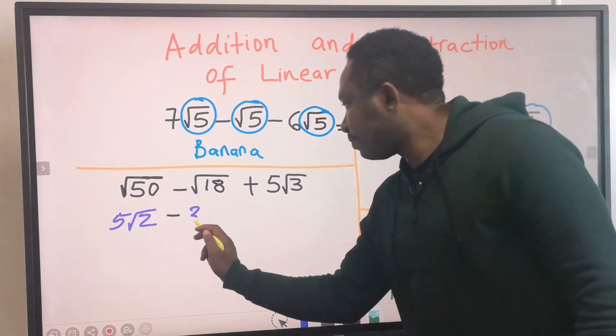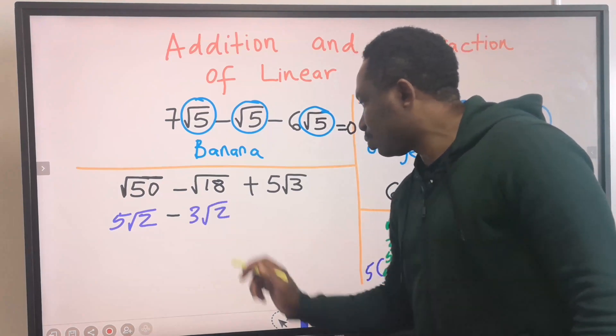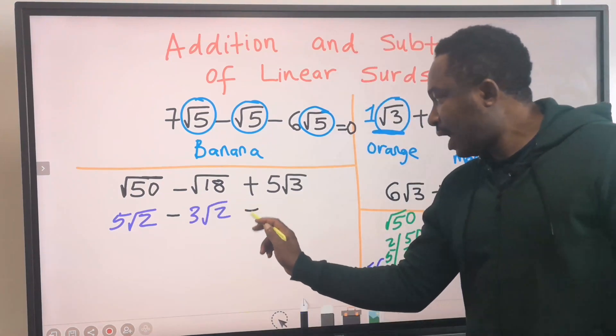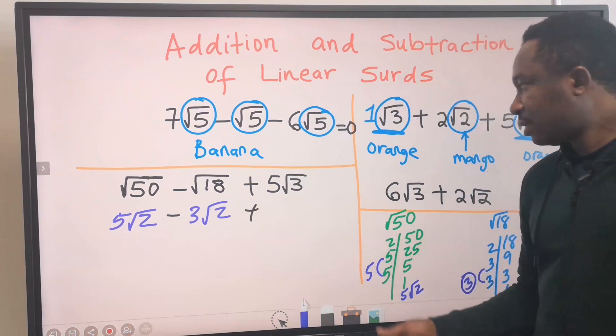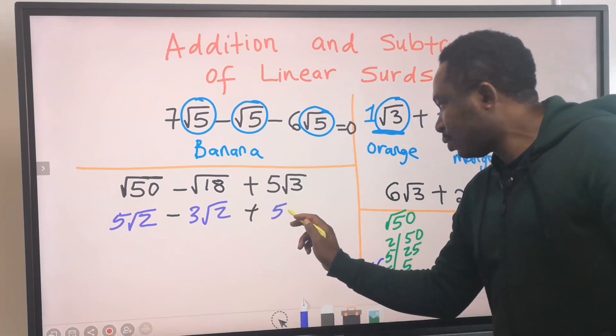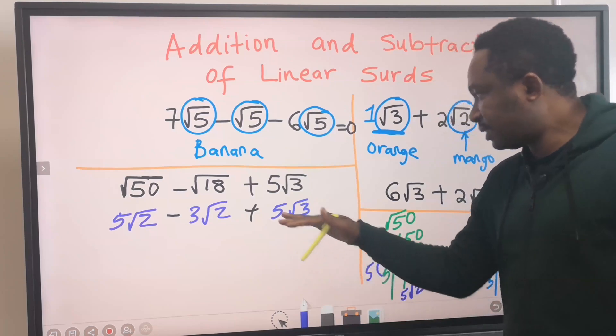Here, I will have 3 root 2. Next, here, I got a plus. And 5 root 3 is still here. We can simplify this further.